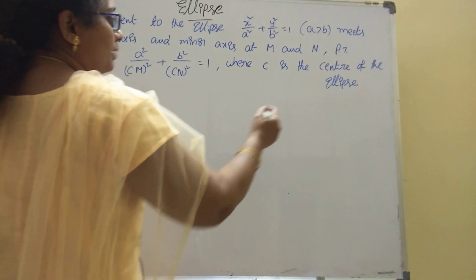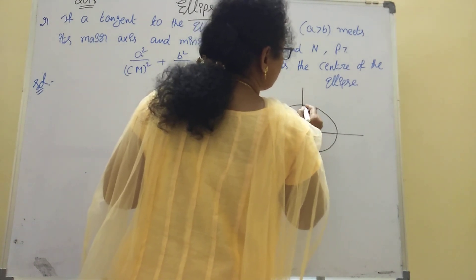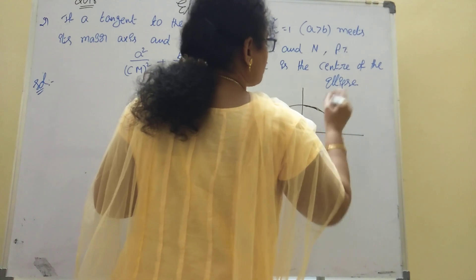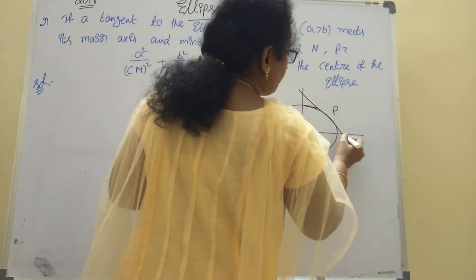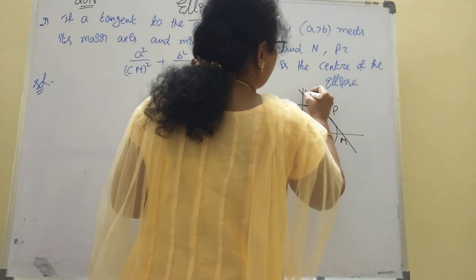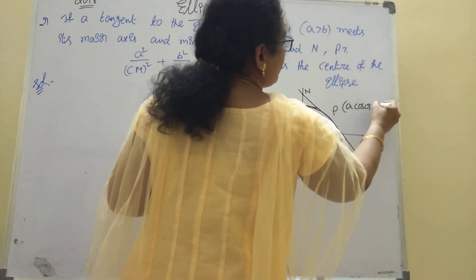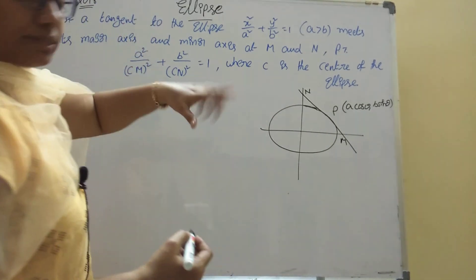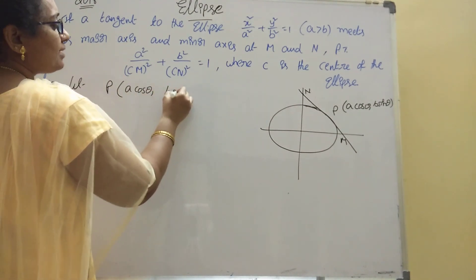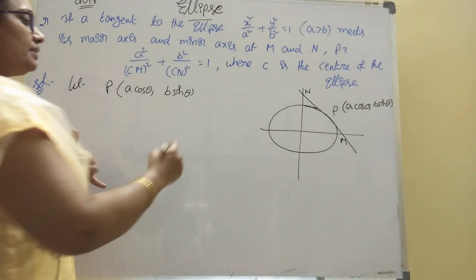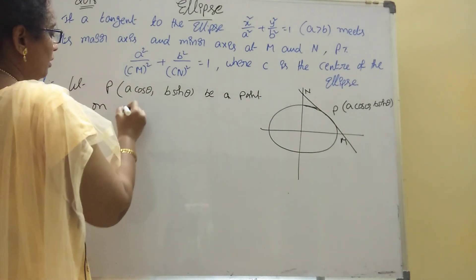First draw the ellipse. We have a point P on the ellipse. The point P is (a cosθ, b sinθ). We draw the tangent at point P and it meets the major axis at M and the minor axis at N.